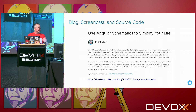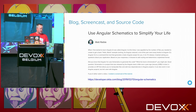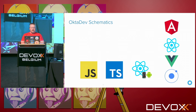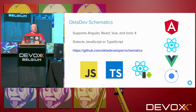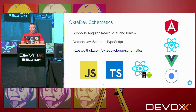I wrote a whole blog post about how to do the ng-bootstrap schematic, and there's also a screencast that goes with it. Okta Dev Schematics is a project I wrote to make demos much easier — it supports Angular, React, Vue, Ionic 4, and React Native as of version 1.0. It detects JavaScript or TypeScript by inspecting your package.json file and then adds authentication accordingly.